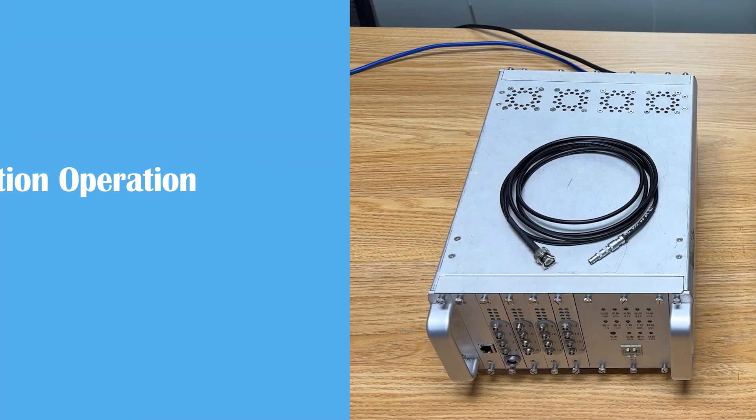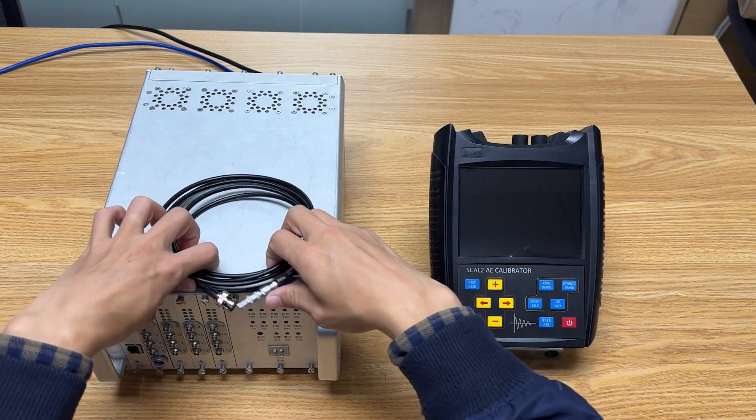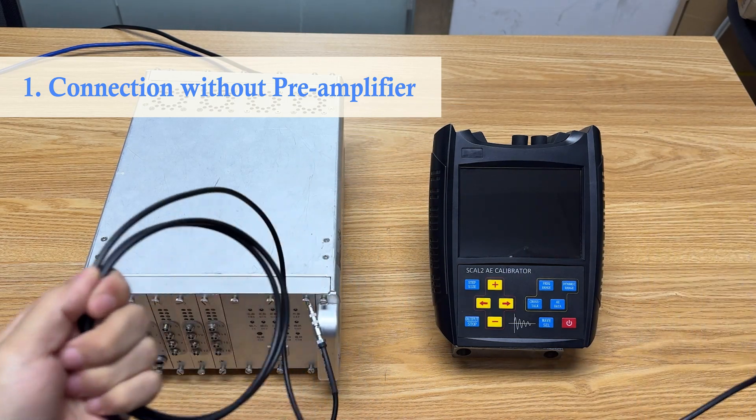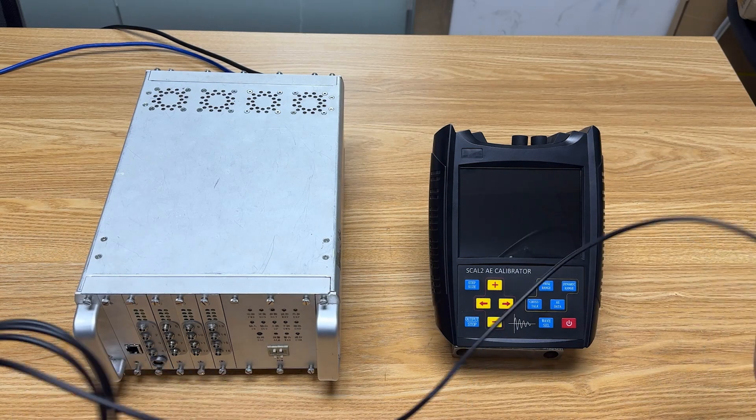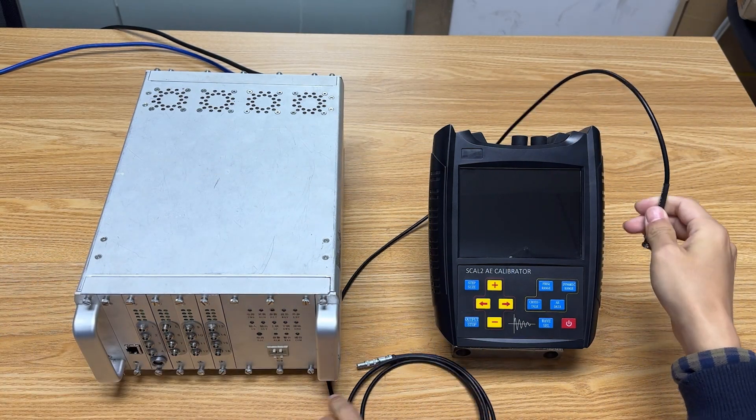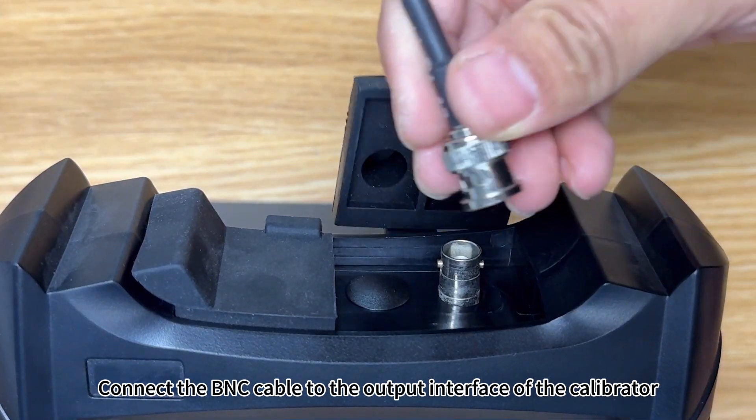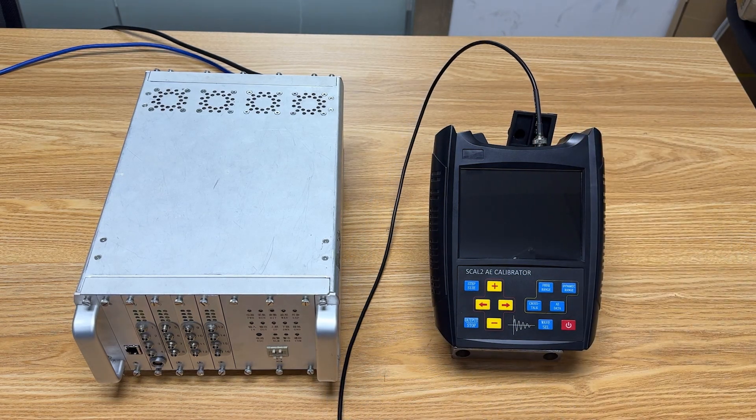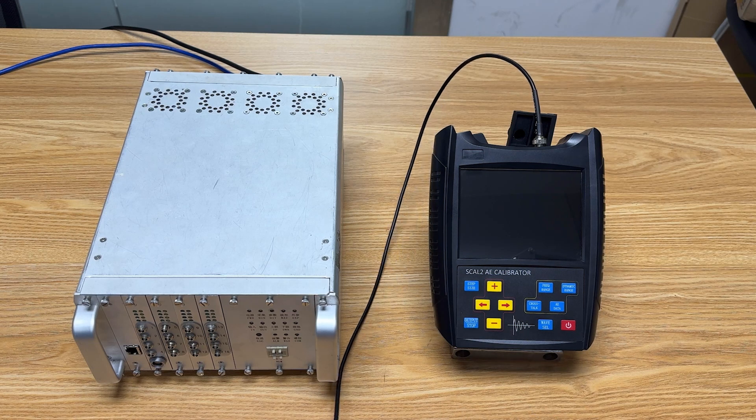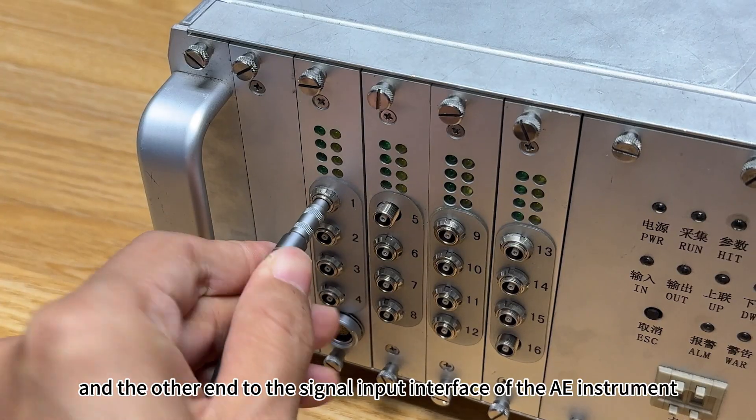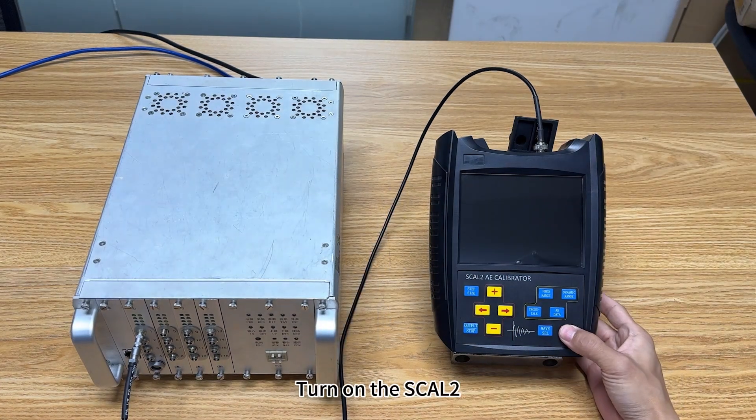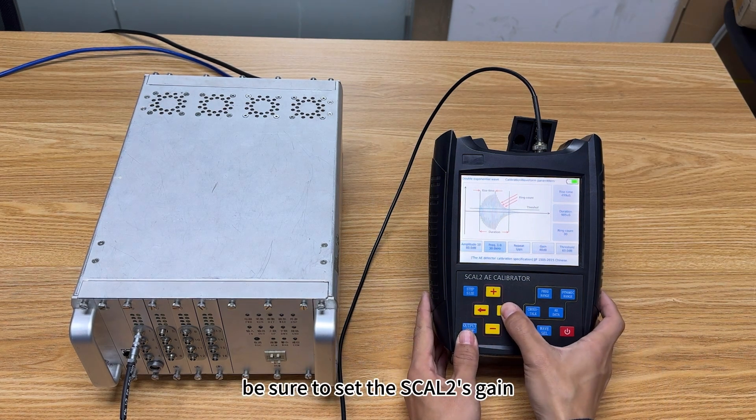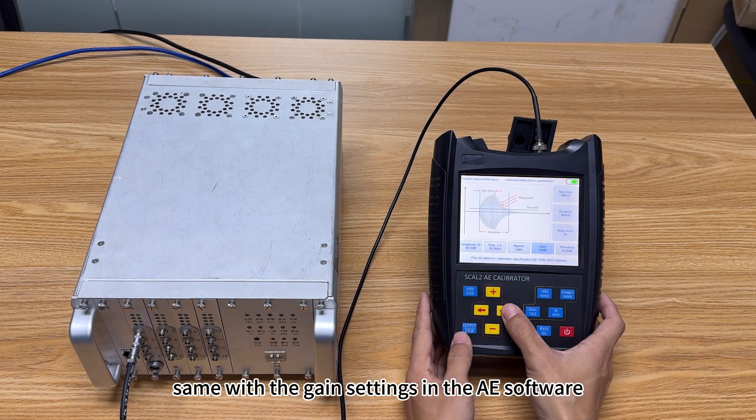There are two kinds of connection. One, connection without pre-amplifier. Connect the BNC cable to the output interface of the calibrator and the other end to the signal input interface of the AE instrument. Turn on the SCAL-2 and it has a built-in amplifier with three different gain settings. Be sure to set the SCAL-2's gain same with the gain settings in the AE software.